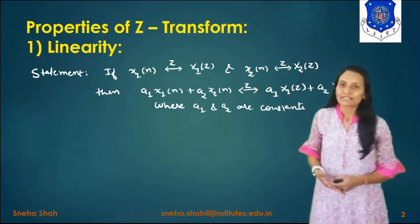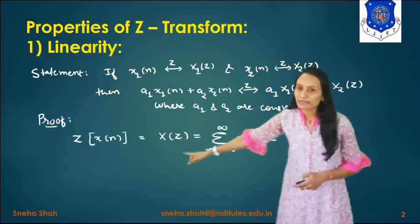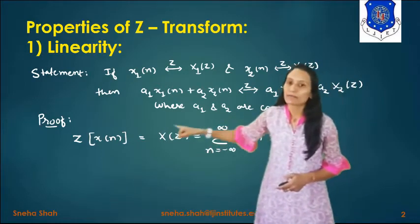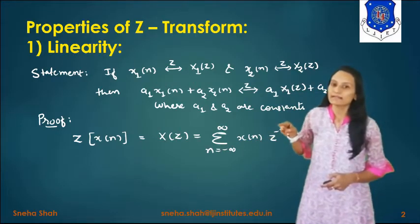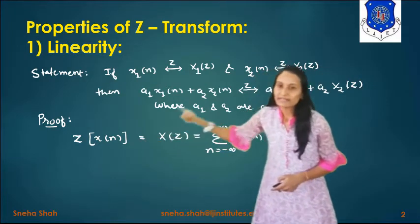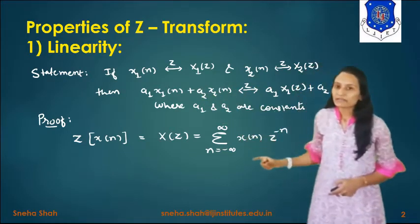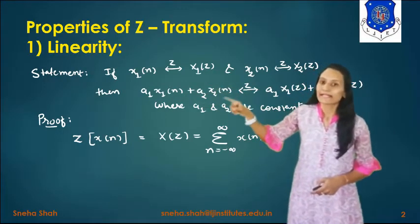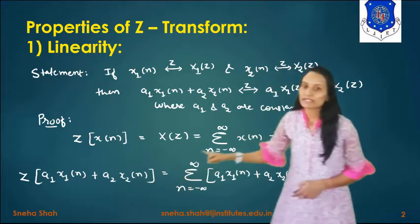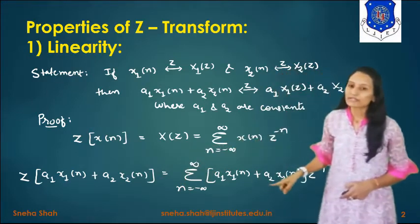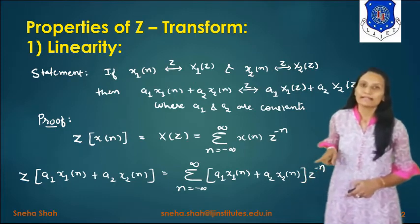To prove any property of Z-Transform, we start with the bilateral Z-Transform equation: Z{x(n)} = X(z) = Σ(n=−∞ to ∞) x(n)·z^(−n). To find the Z-transform of a1·x1(n) + a2·x2(n), we substitute this expression in place of x(n), giving: Σ(n=−∞ to ∞) [a1·x1(n) + a2·x2(n)]·z^(−n).